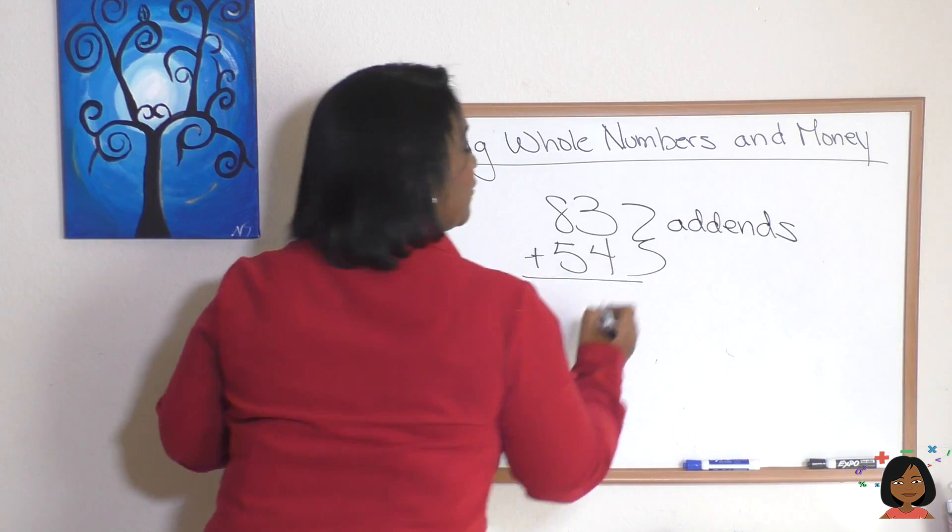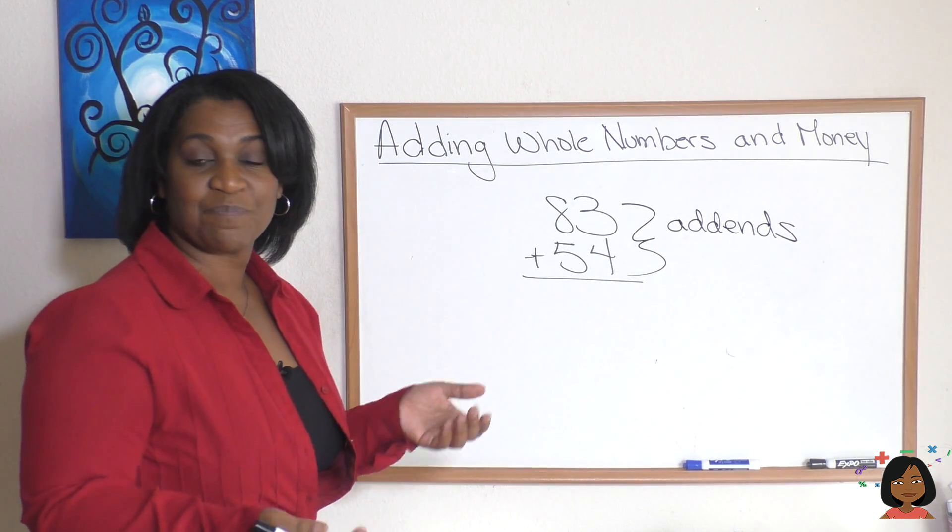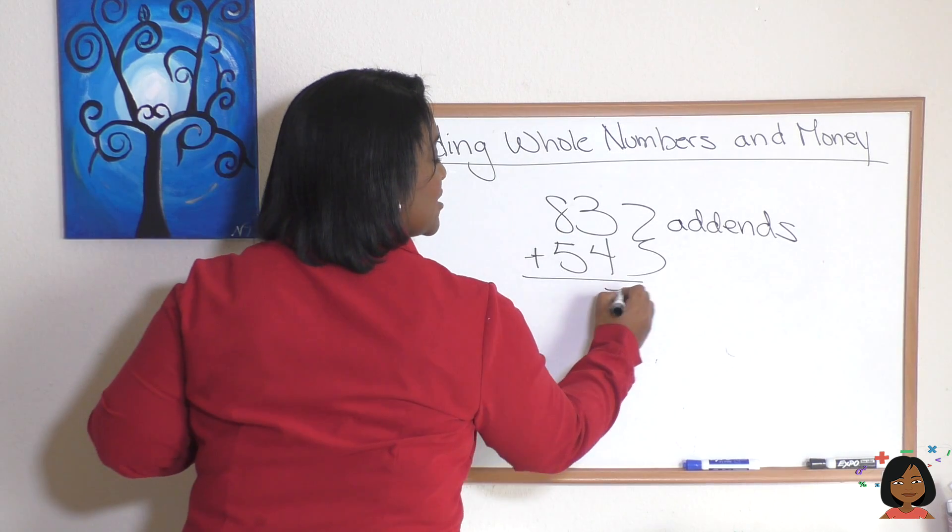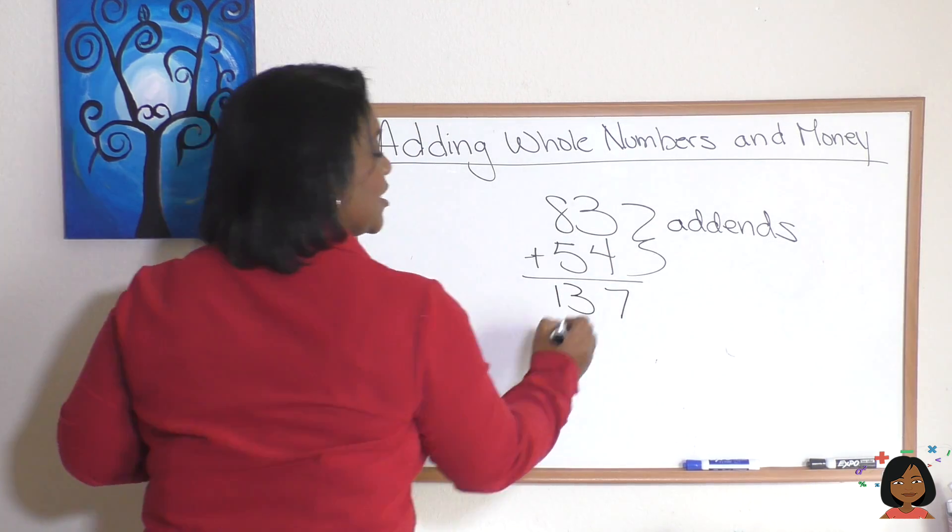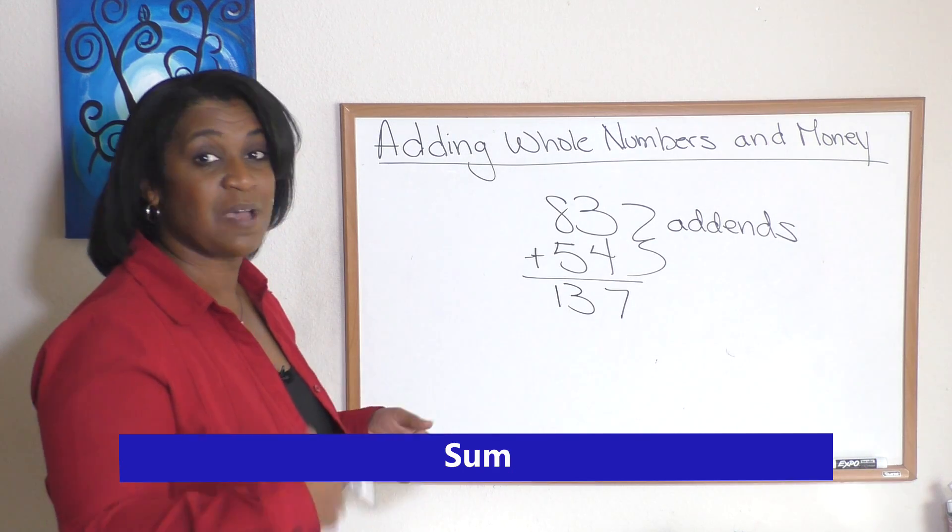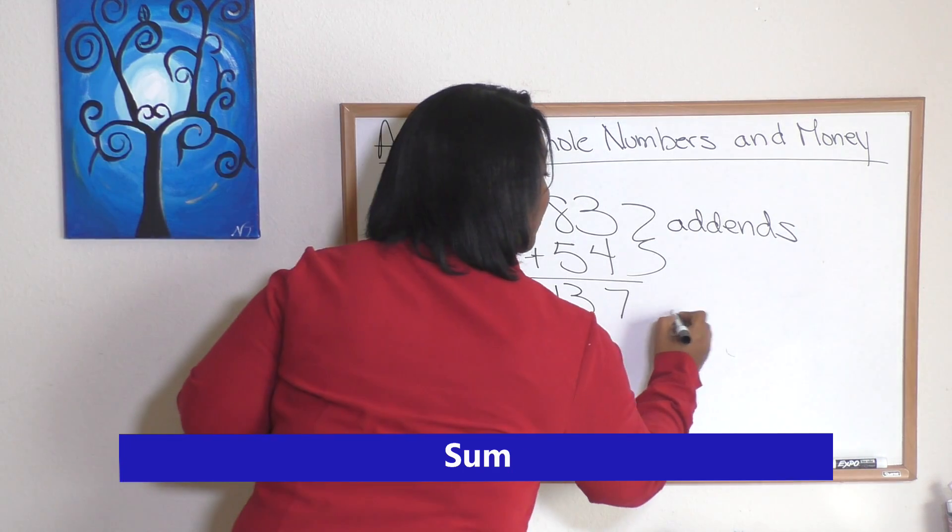So 83 and 54 are my addends when I add two numbers together. So let's go ahead and add them. Four and three is seven, eight and five is thirteen. My number 137 is called the sum. So when we add two numbers together or more than two numbers we call it the sum.